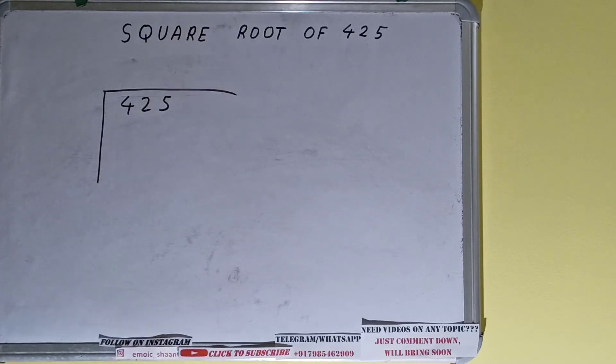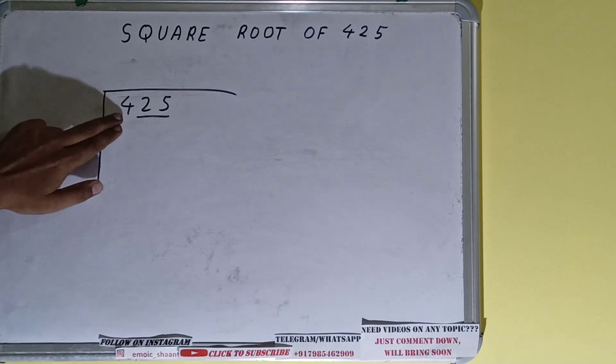The next thing we need to do is form pairs from the right hand side. Only one pair can be formed and this 4 will be left out. So first we'll divide this 4 and then we'll bring down the pair.